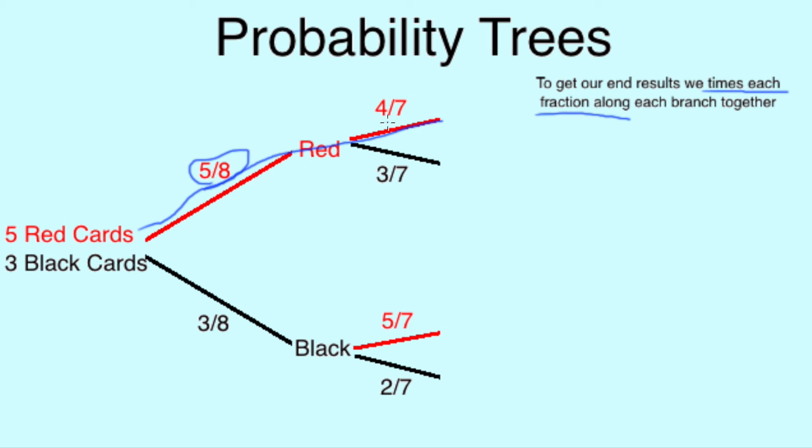So the branch, if we had chosen red, gives us 5 over 8 times 4 over 7, which gives us 20 over 56, or 5 over 14. We repeat this for each possible branch for our final results.